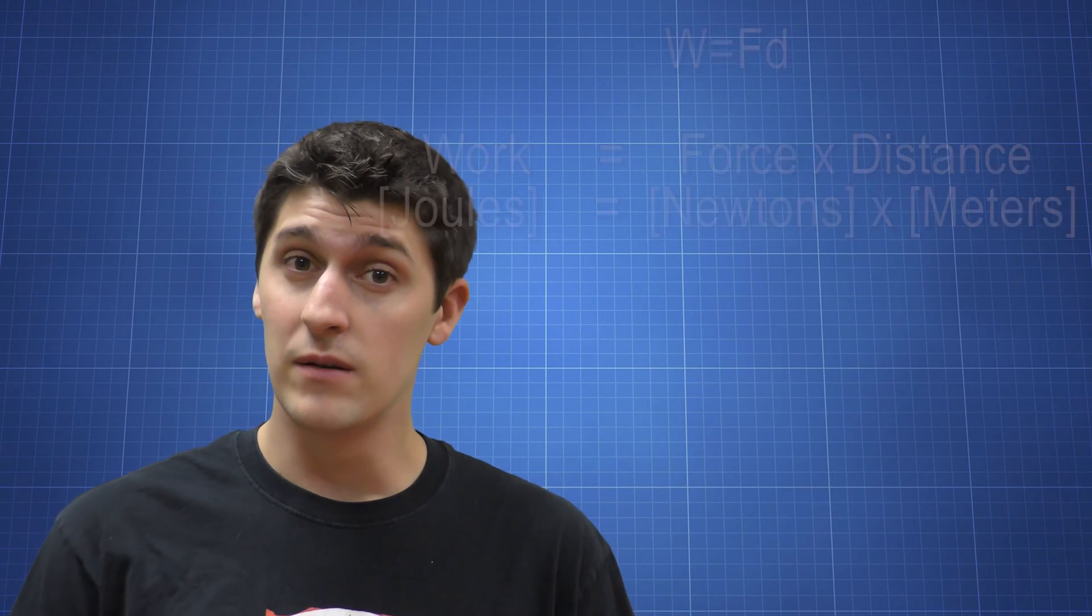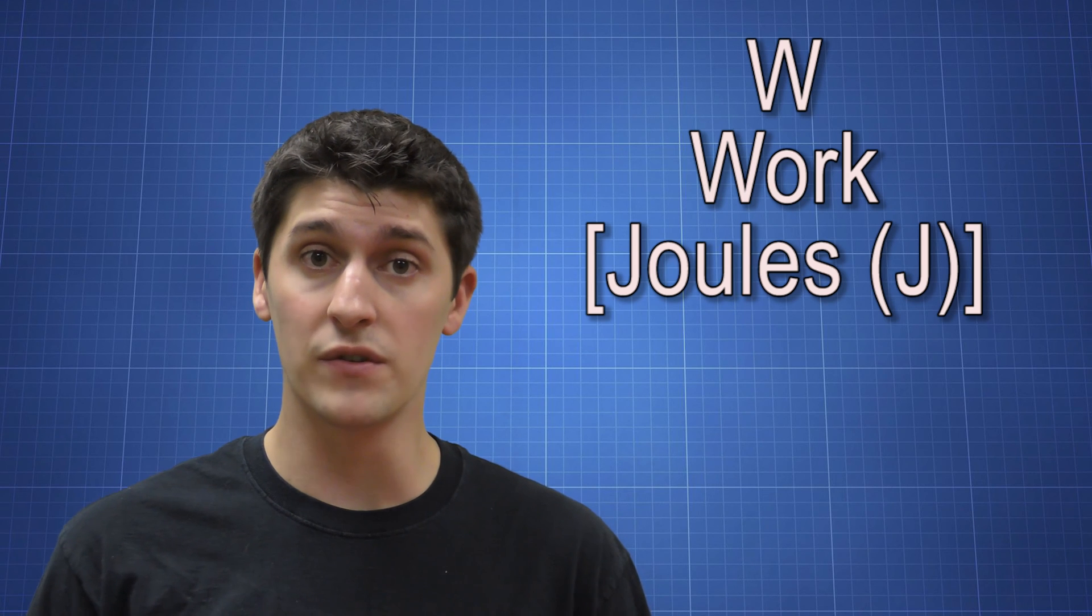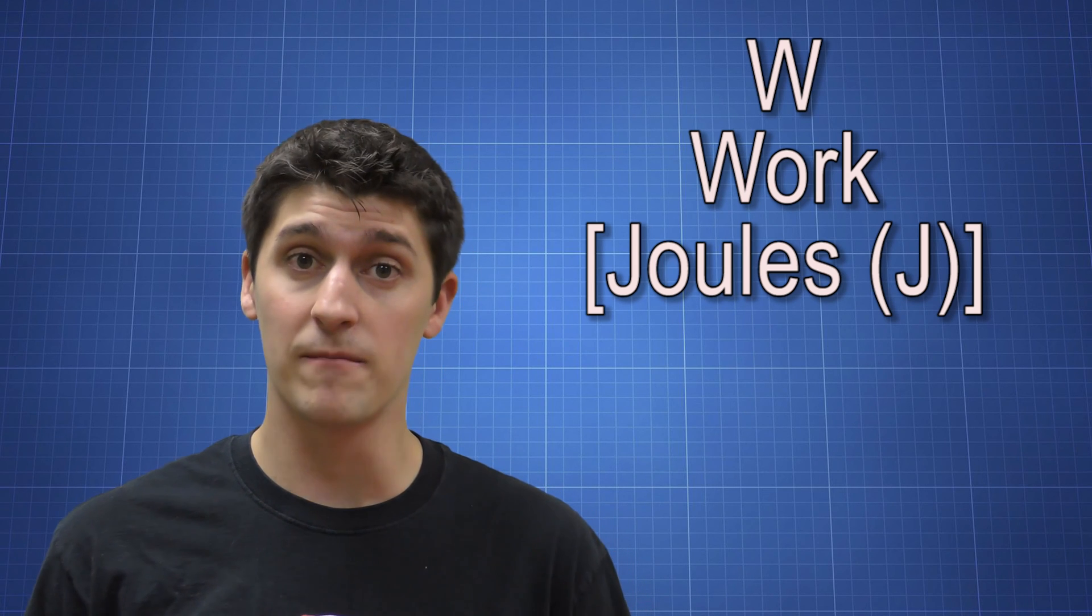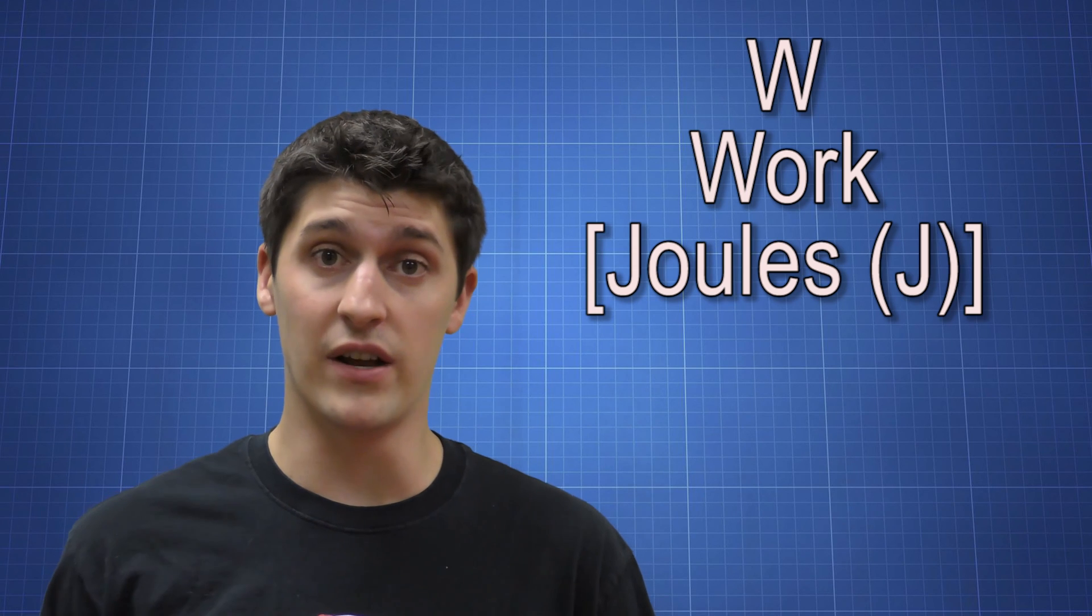We need to understand what the unit is. We use the symbol W for work, and work is measured in joules, the abbreviation being J. Joules are the units for any kind of energy, and there's a lot of different kinds.